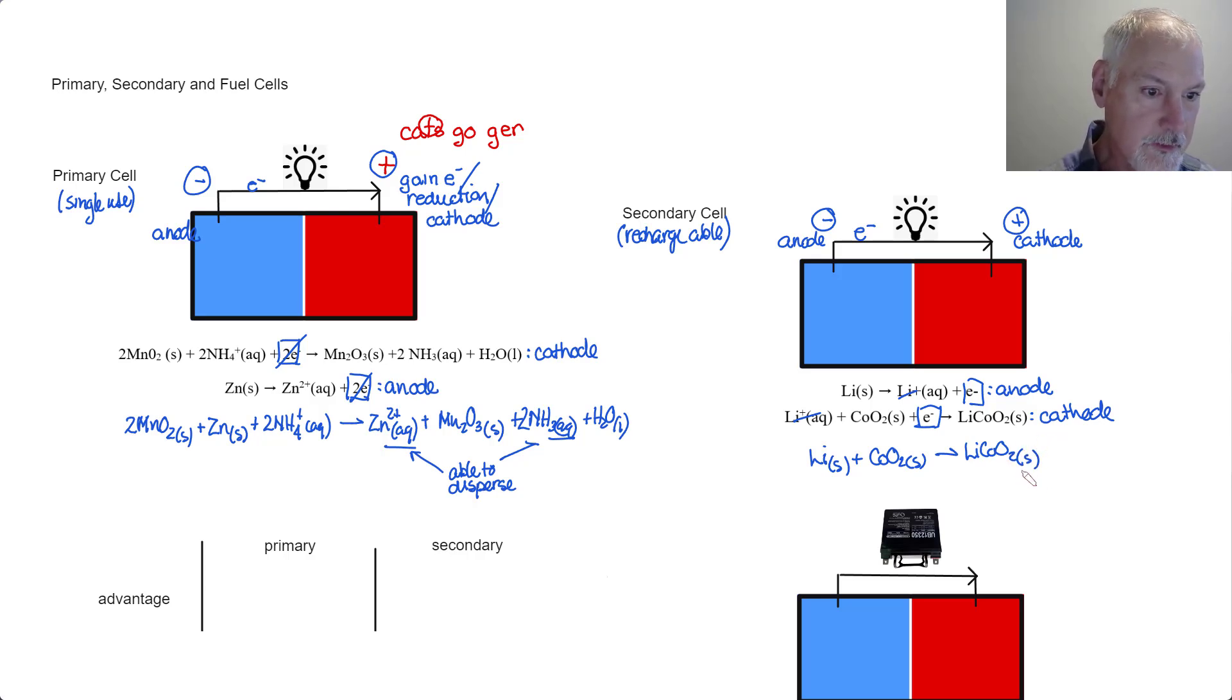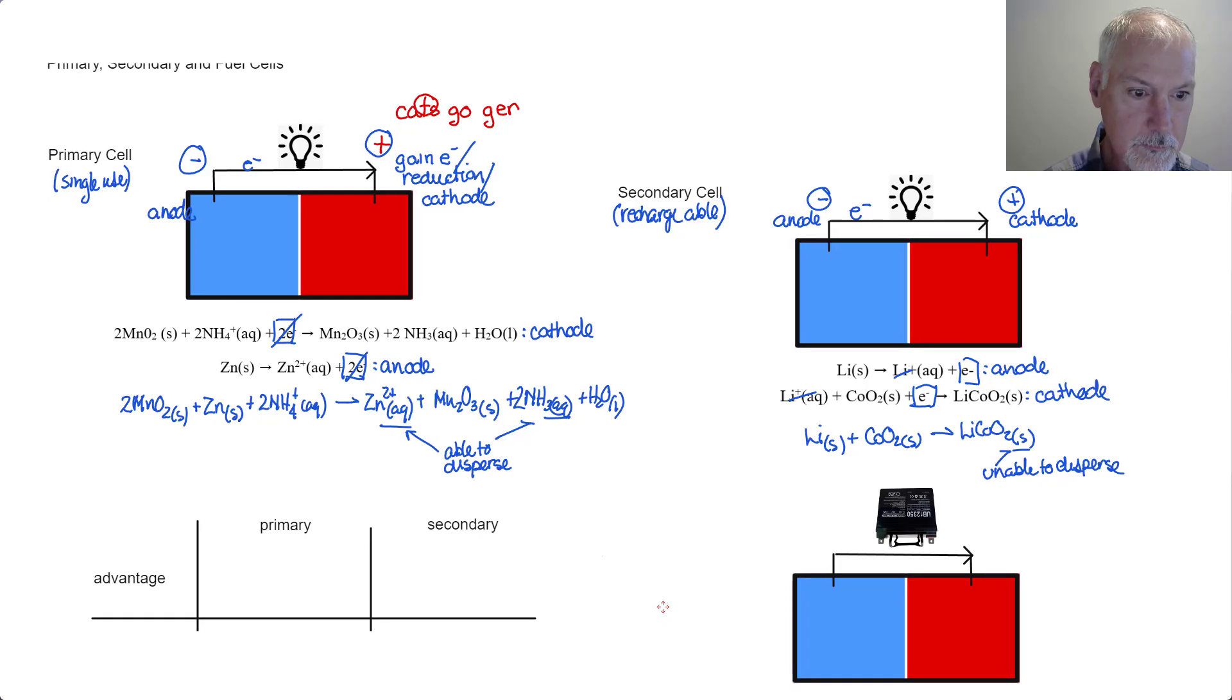The thing you notice here is the presence of the solid. It's unable to disperse because it can't spread out. It is possible to take this reaction and reverse it. And that's what I'm going to show down here in the diagram below.